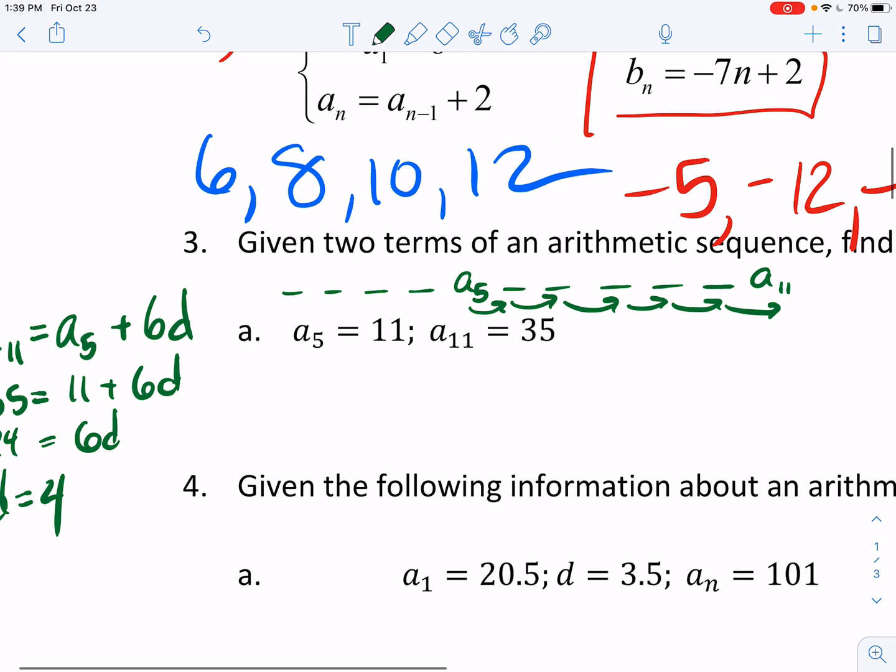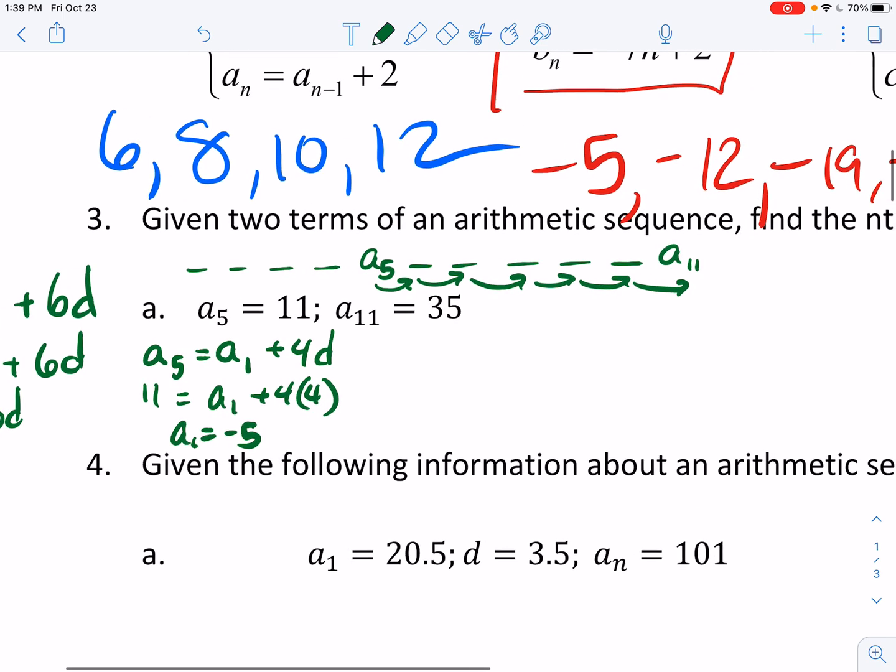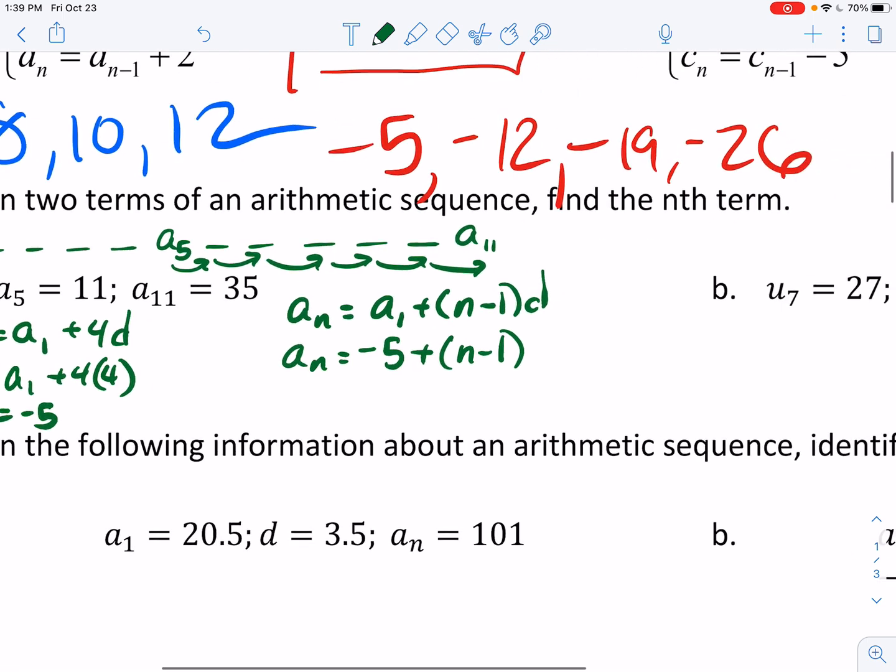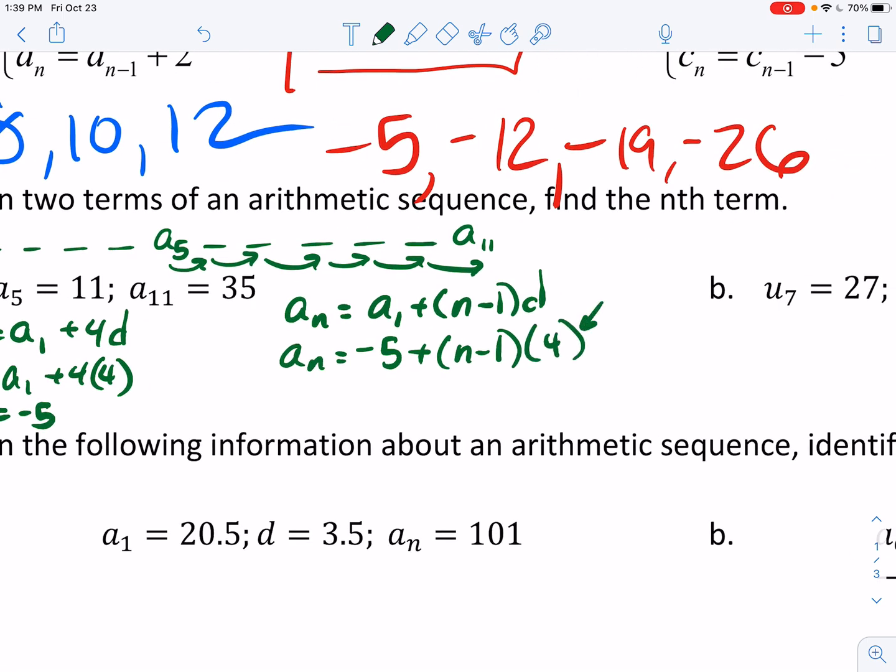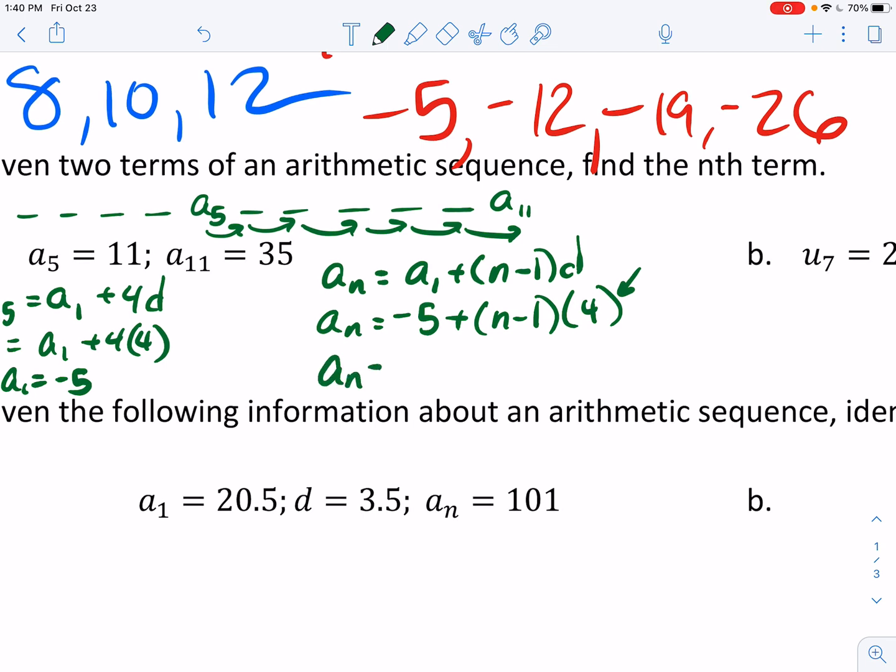But I also need to know the first term if I'm going to write the rule. So I know that A sub 5 would be equal to A sub 1 plus 4d. So 11 would be equal to A sub 1 plus 4 times 4. That's 16, subtract 16, so A sub 1 is equal to negative 5. So now, my formula was that A sub n is equal to A sub 1 plus n minus 1 times d. So A sub n is equal to negative 5 plus n minus 1 times 4. I like to put these parentheses here just in case that that's a negative. It's just a little easier to work with this 4n minus 9. And so that is the answer that I prefer.